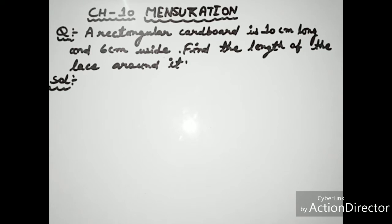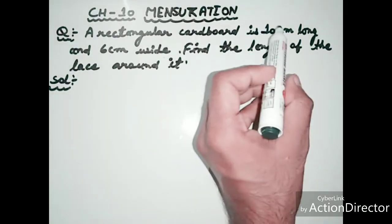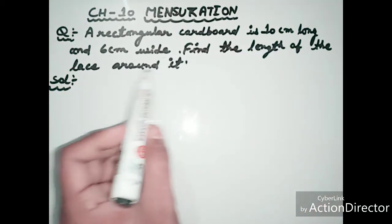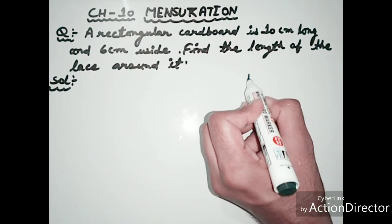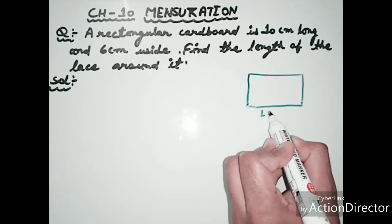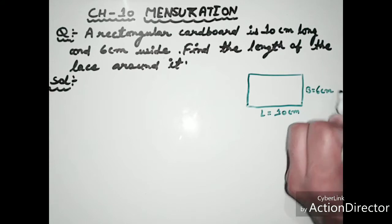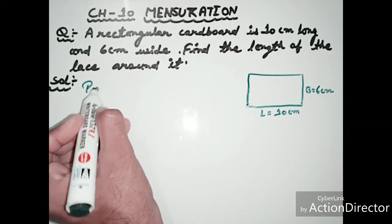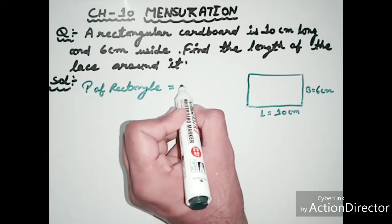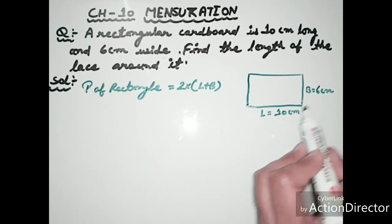Example A: A rectangular cardboard is 10 centimeters long and 6 centimeters wide. Find the length of the lace around it. We have a cardboard with length 10 centimeters and breadth 6 centimeters. First, we find the perimeter of the rectangle. The perimeter of a rectangle equals 2 into (L + B), where L equals 10 and B equals 6.